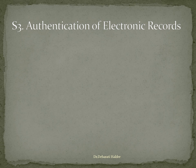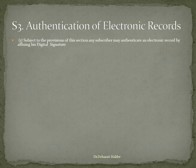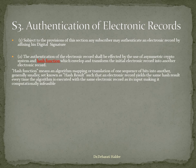Section 3 discusses about authentication of electronic records. Under sub-clause 1, it says, subject to the provision of this section, any subscriber may authenticate an electronic record by affixing his digital signature. Subsection 2 says the authentication of the electronic record shall be effected by the use of asymmetric cryptosystem and hash function, which envelop and transform the initial electronic record into another electronic record. We also must understand about hash function.